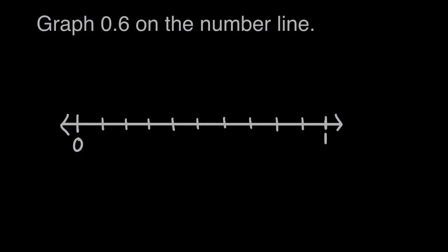Graph 0.6 on the number line. Down here we have a number line that goes from zero to one and it's split into one, two,